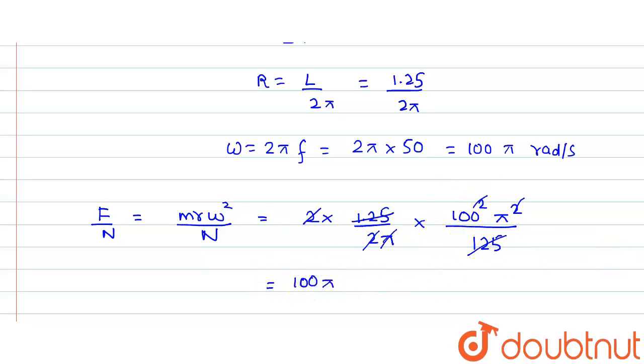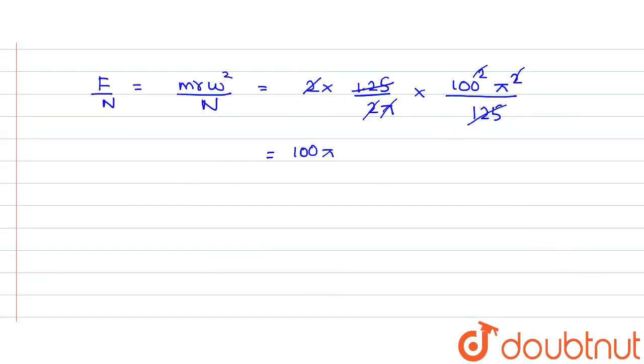And if we give 100 to 125, then this could cancel. 125 with 1 power would get cancelled. So finally it would turn out to be 100π.